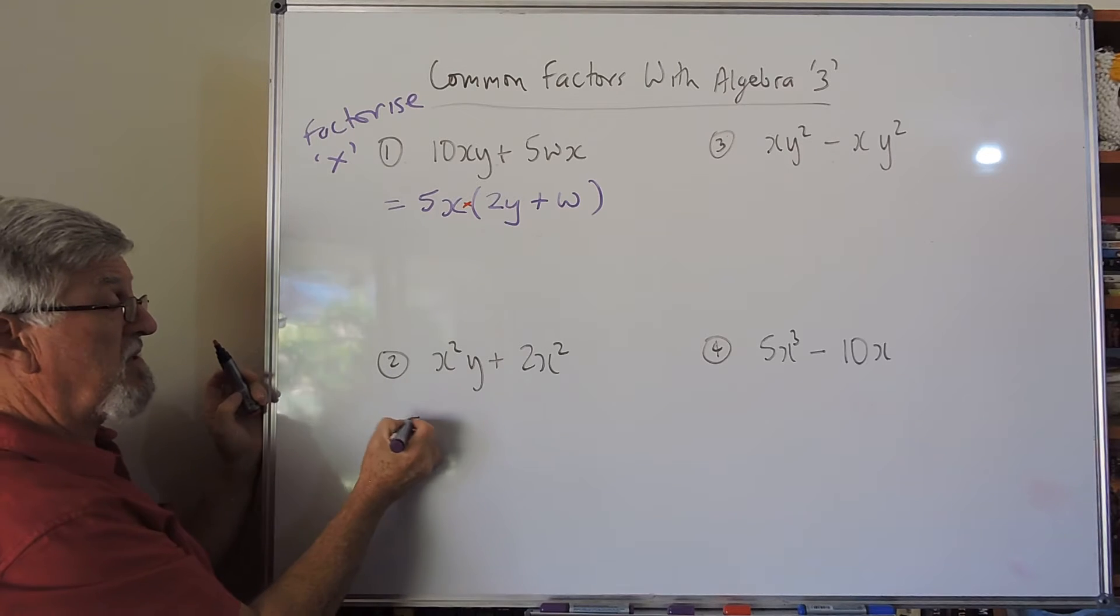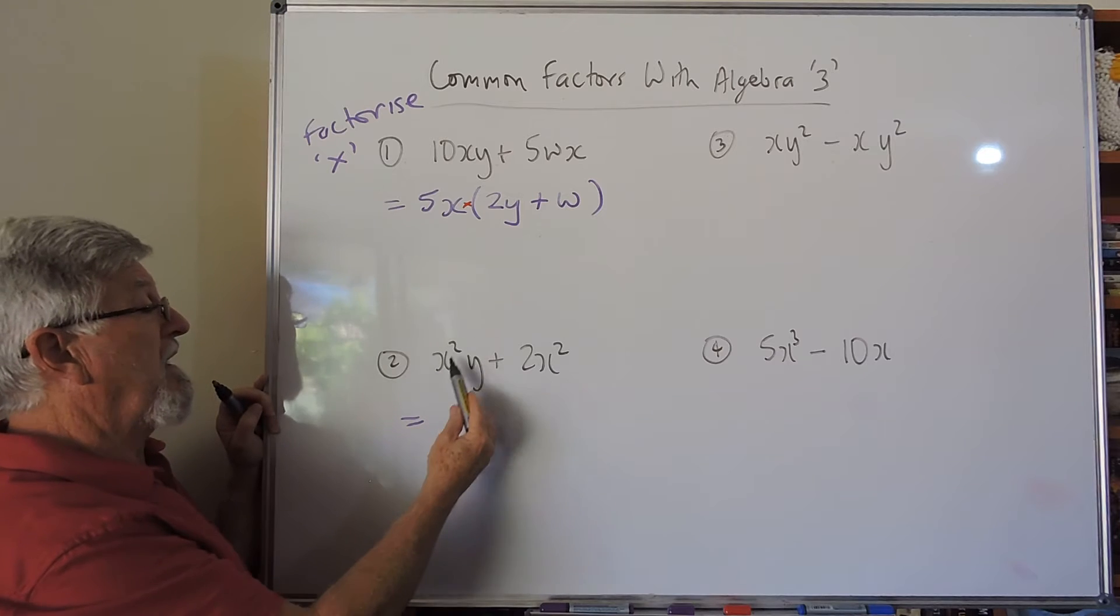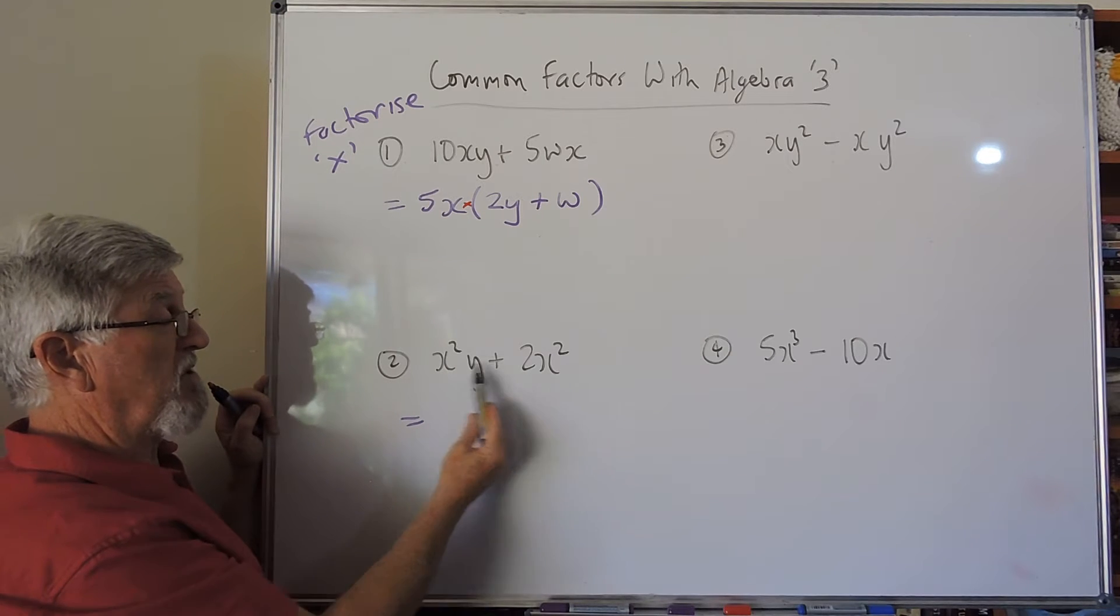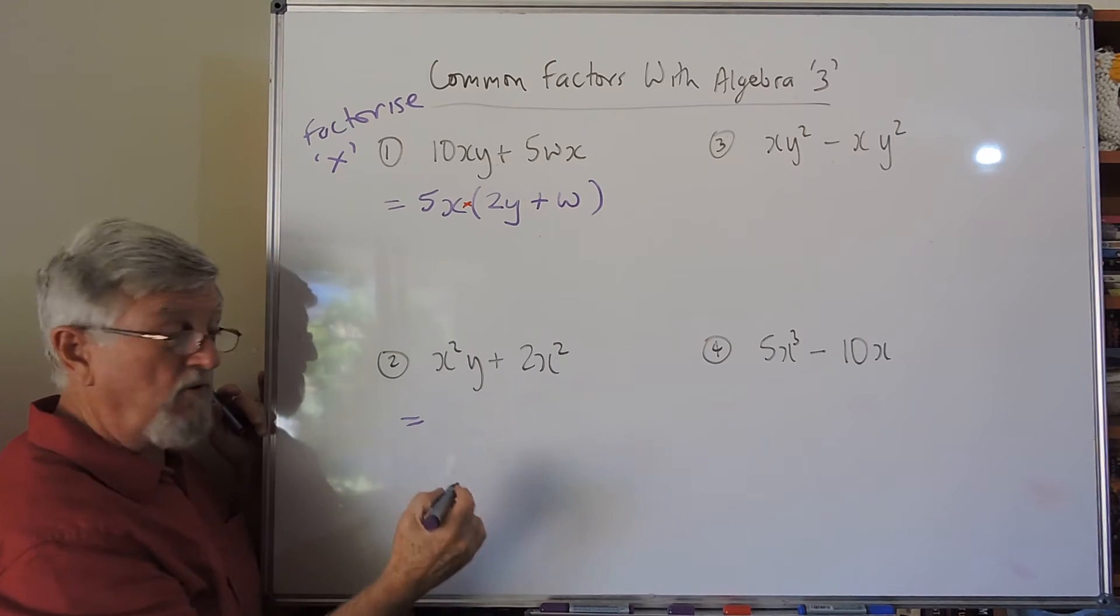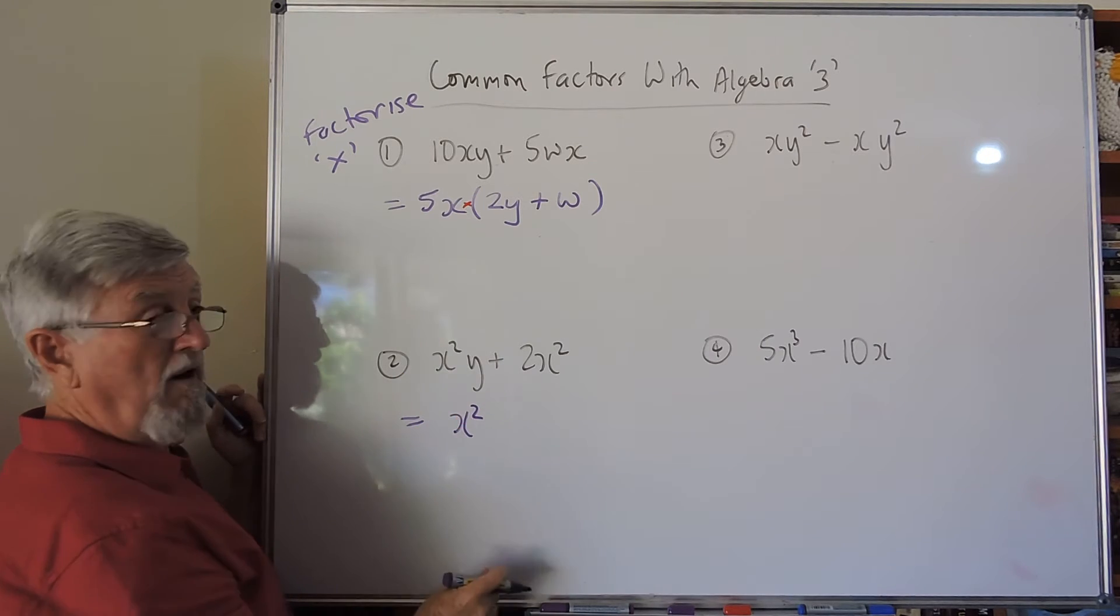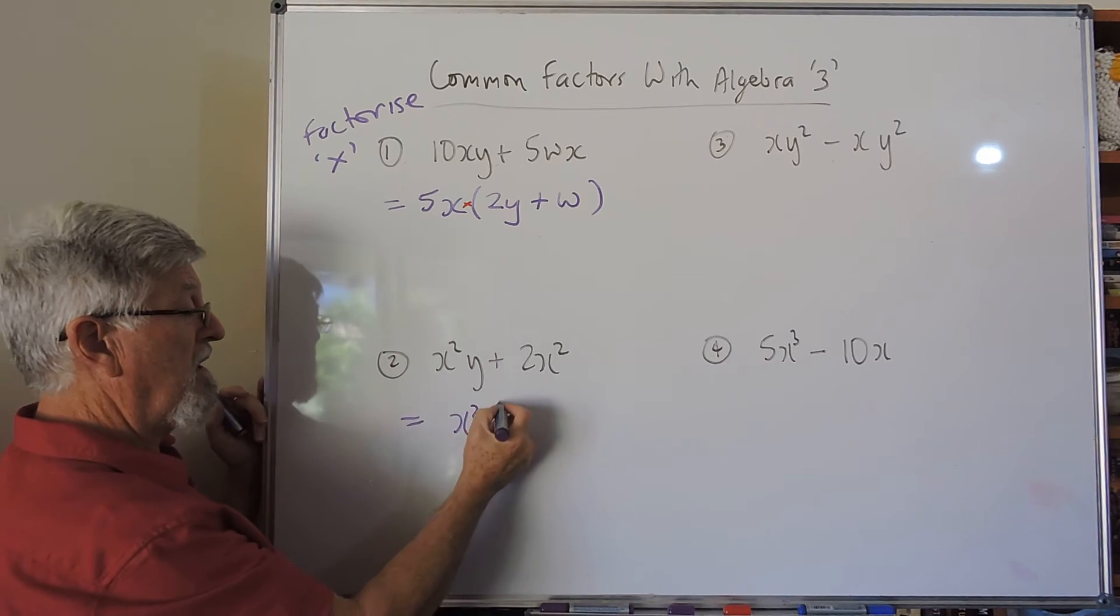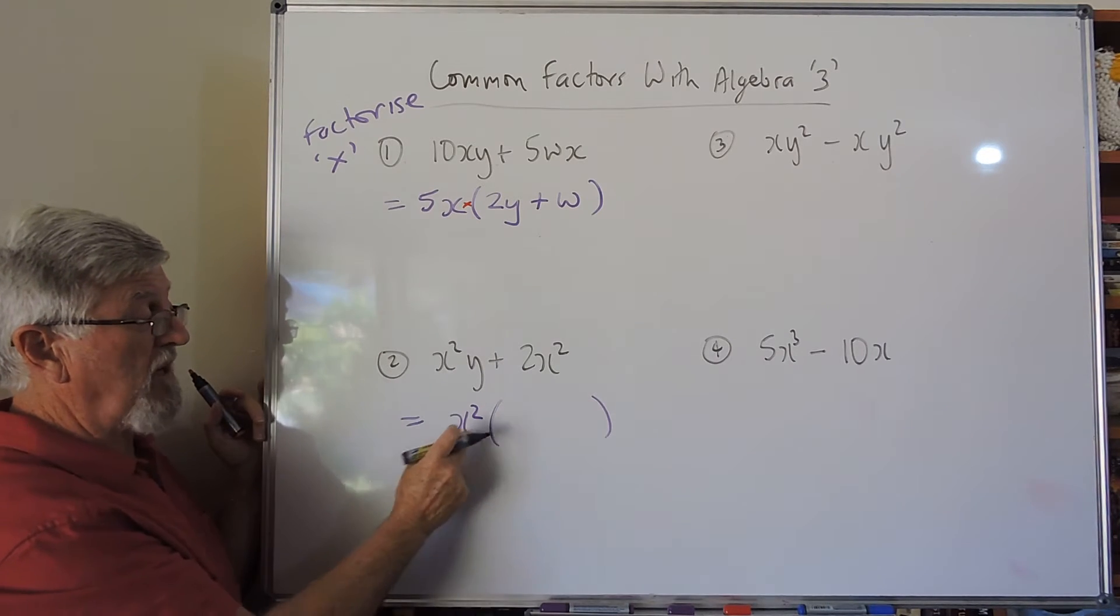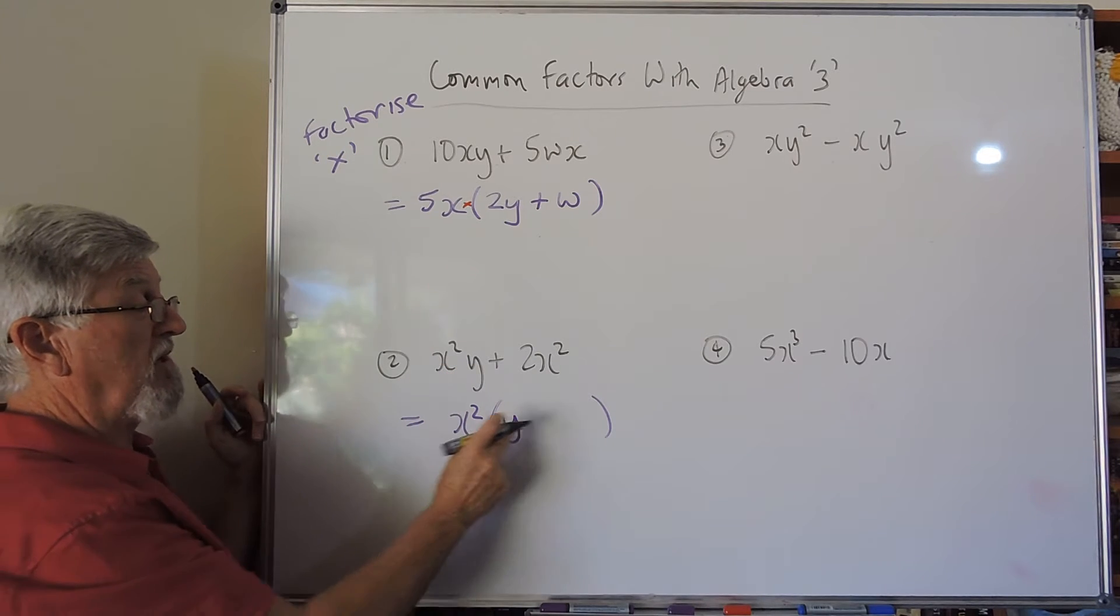The second one: what have we got in the first term that's in the second term? Well that two is not over here, there's no four or six or eight or ten. There's an x here and there's an x here, but there's more than one x here. So this time, just a little twist as it builds up - there's an x² in both of them. The y is not in both and the two is not in both, they're not both even.